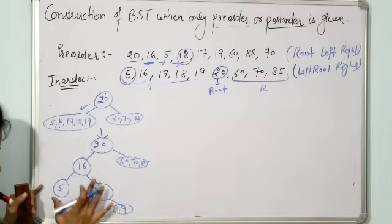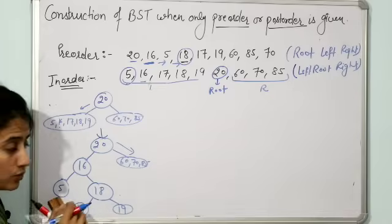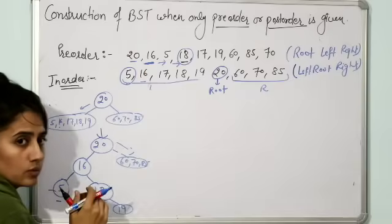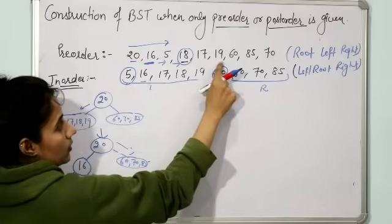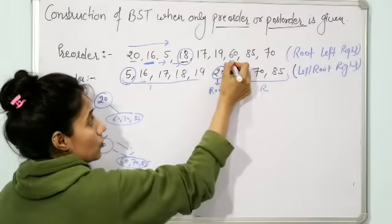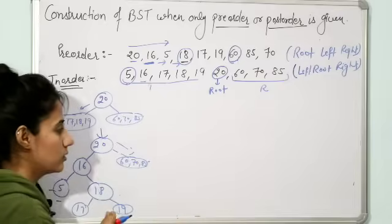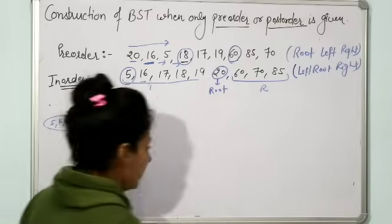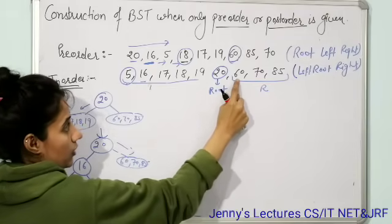The left sub-tree is now fully drawn. Now go to the right sub-tree of 20, which contains 60, 70, and 85. Out of these numbers, check which one is coming first in the pre-order. 60 is coming first — 70 and 85 both come after 60. So 60 would become the root of this right sub-tree. The rule is: the number that comes first in pre-order becomes the root.